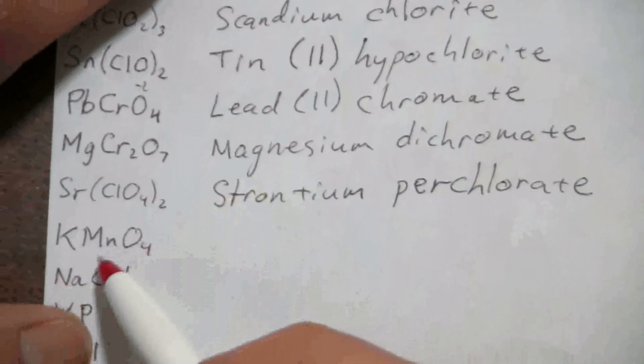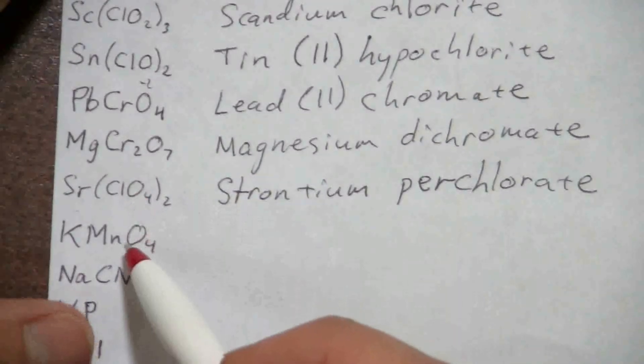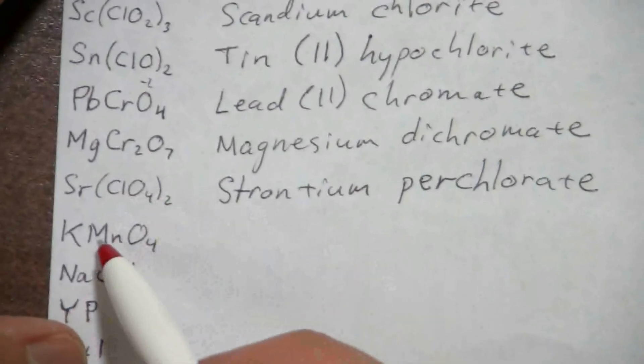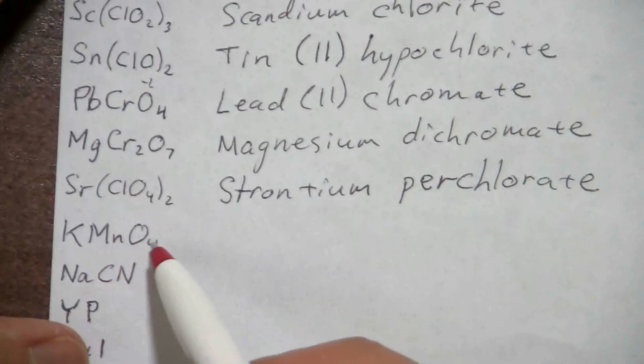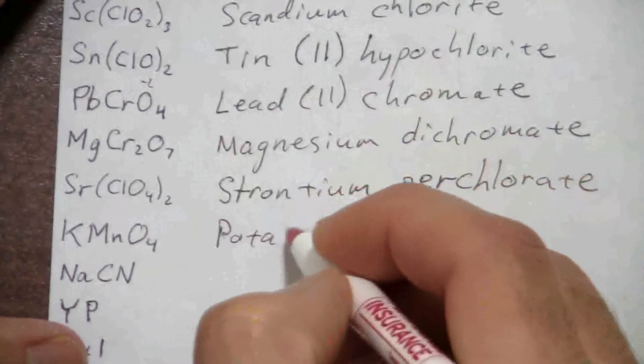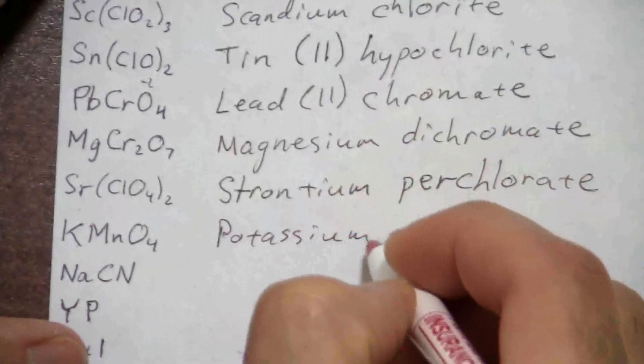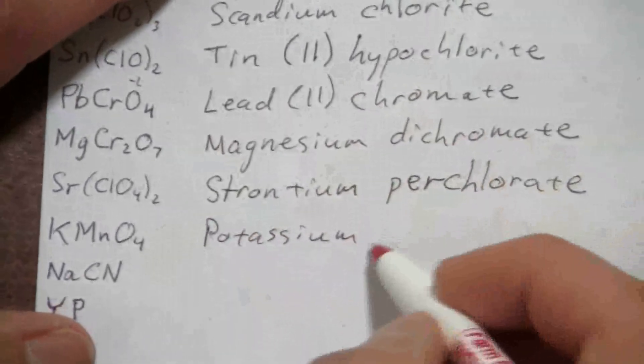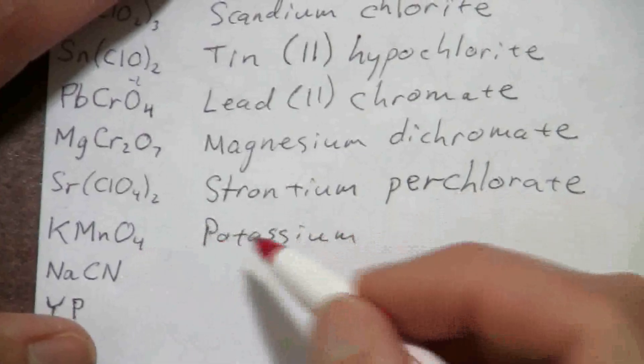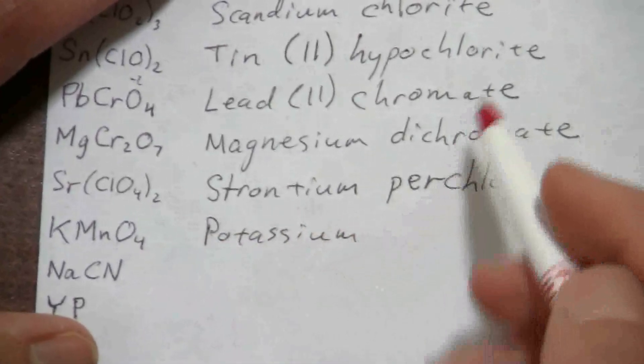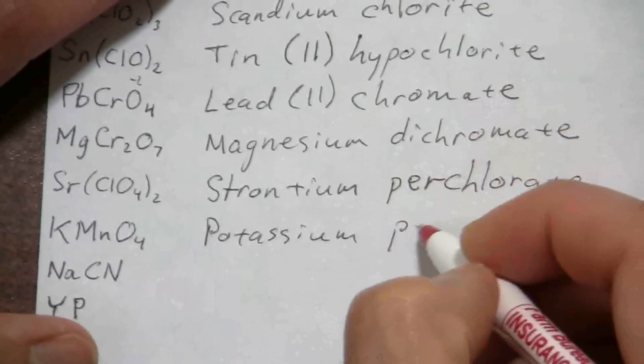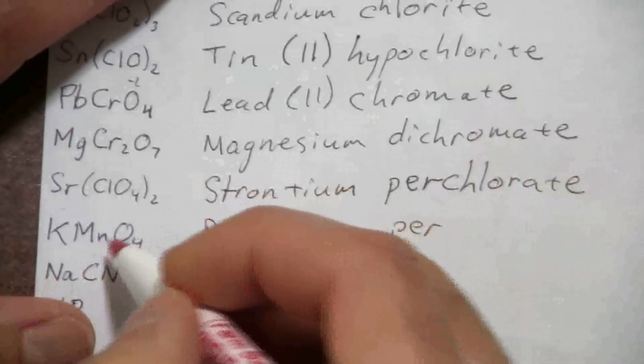Okay, and here we have a similar ion, except instead of chlorine with four oxygen, it's manganese with four oxygen. So we have potassium, which always has a positive one charge, so we don't have to write its charge in roman numerals. It's just potassium, and then like the name for the perchlorate, it's permanganate.